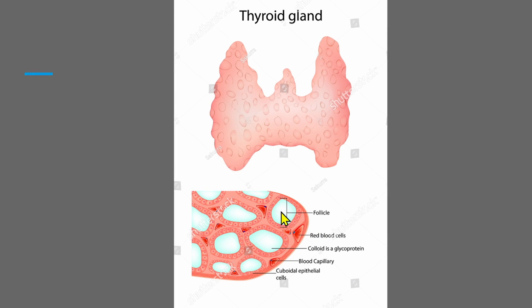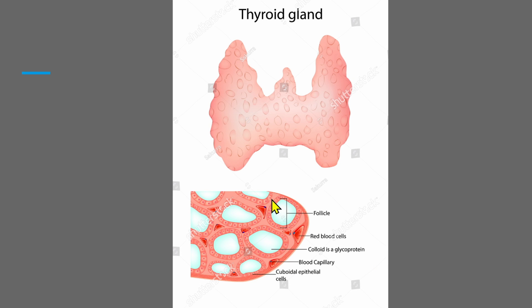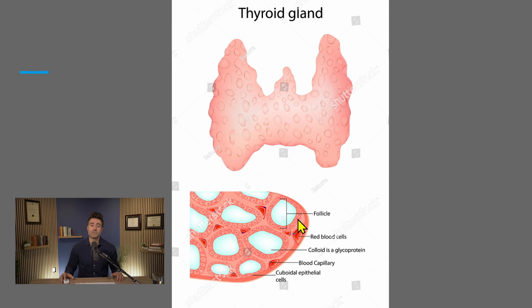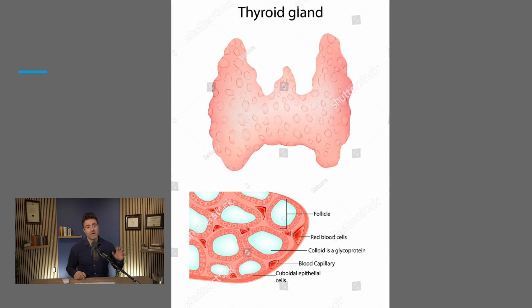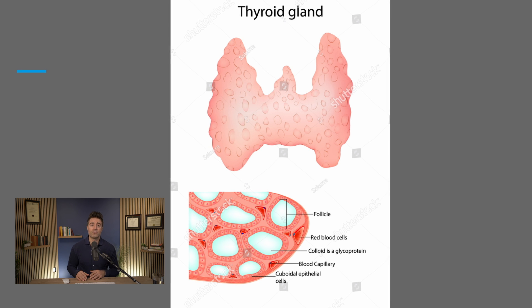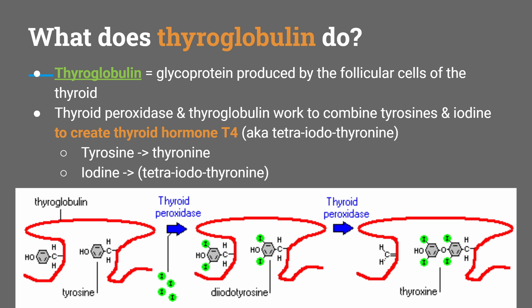As you'll see here, inside the follicle is this lumen — this is where the grape juice of the thyroid gland is stored, or the thyroid hormone. The follicles in the membrane have components that work to use nutrition and produce thyroid hormone. And this is where thyroglobulin works along with thyroid peroxidase. This schematic is helpful to visualize what's happening.